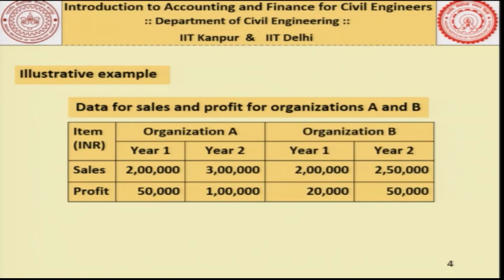If we add corresponding figures for another organization, say organization B — please note that they began together, that is their sales in year 1 were the same 2 lakhs. Now this organization grew to 3 lakhs, while B grew to 250,000. Organization A had profits of 50,000 while B's profit was only 20,000. A's profit grew from 50,000 to 1 lakh and B's grew from 20,000 to 50,000. Given this data, there are just so many ways in which these 8 numbers can be looked at.